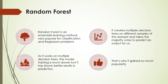So what is random forest? Random forest is an ensemble learning method, very popular for both classification and regression problems. How it works: it creates multiple decision trees on different samples of the same dataset and takes the majority vote to predict an output for us. We are going to see a picture demonstration of how random forest works in a little bit. As it works on multiple decision trees, the model training is much slower than decision trees, but it has shown better results in prediction, and that's why it gained so much popularity.